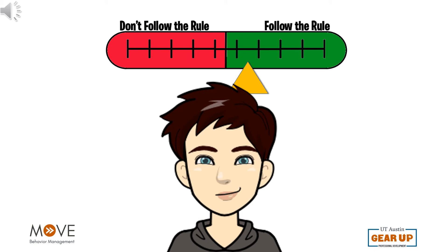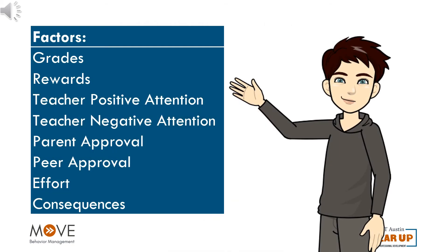His motivation to follow the rule is greater than his motivation to not follow the rule, so he follows the rule. Let's look at all the factors Billy considered: grades, rewards, teacher positive attention, teacher negative attention, parent approval, peer approval, and effort.